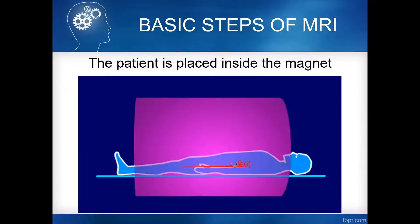Once the patient is exposed to the strong magnetic field, all hydrogen protons in the body will align. In normal condition, the orientation of hydrogen protons in our body is randomly oriented, meaning we are not magnetized.